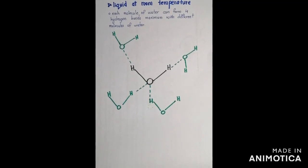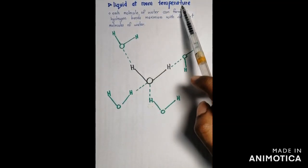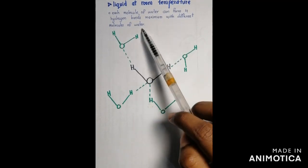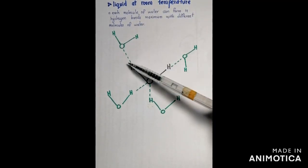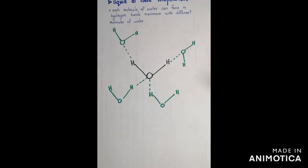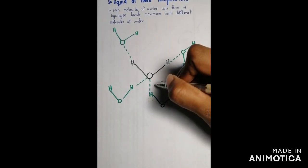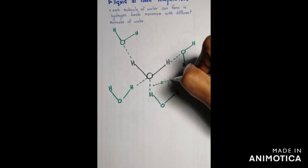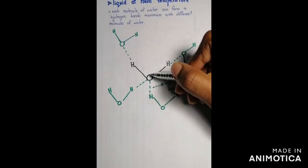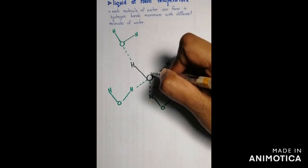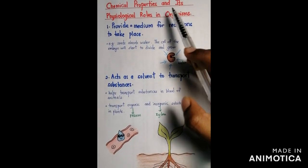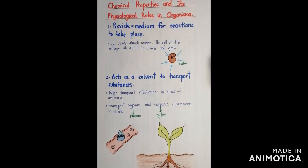The next chemical property of water is that water is liquid at room temperature. Each water molecule can form a maximum of four hydrogen bonds with different water molecules. One water molecule can be bonded to up to four other water molecules. These bonds are called hydrogen bonds — where a hydrogen atom is bonded to an electronegative atom, and oxygen is the electronegative atom here since it is slightly negative.